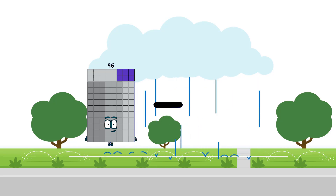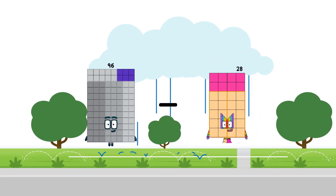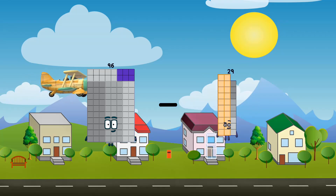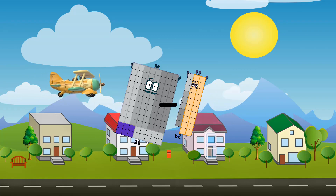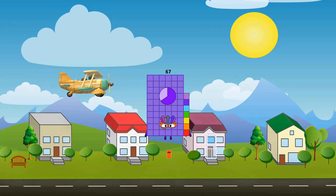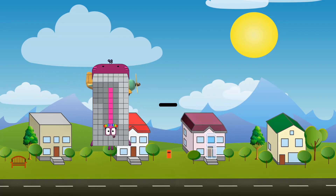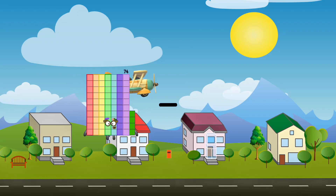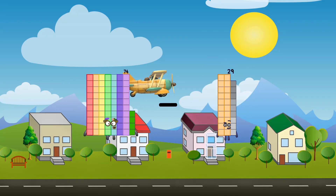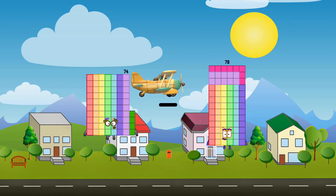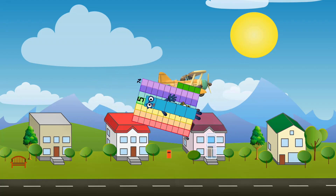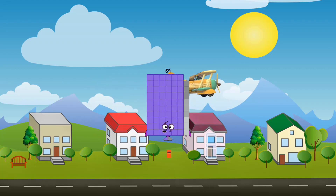96 minus 29 equals 57. 74 minus 57 equals 59.